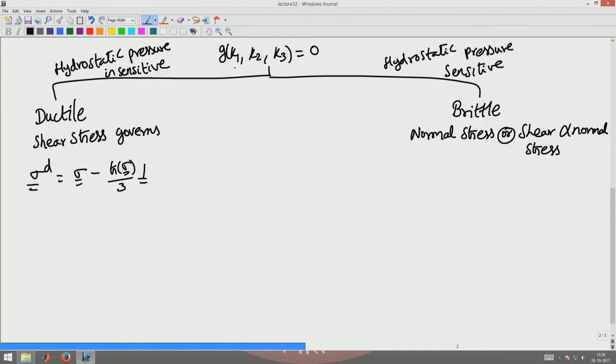So now instead of depending upon G as a function of K1, K2, K3 or F as a function of general function of sigma, it will depend upon a special function of sigma d equal to 0 for ductile mode of failure.